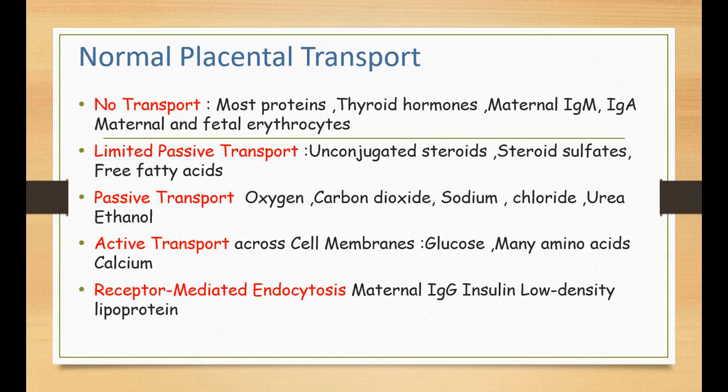Certain materials are not transported between the maternal and fetal circulations at all. For example, most proteins in the maternal circulation do not transfer to the fetus due to their large size. Thyroid hormones are not transported. Maternal IgM, IgA, and the red blood cells of both the fetus and mother are not transported between the two circulations — otherwise it would lead to serious disease.